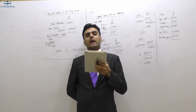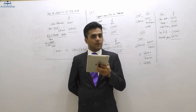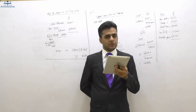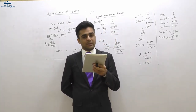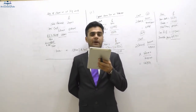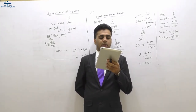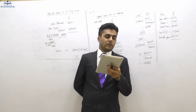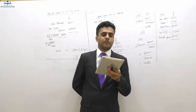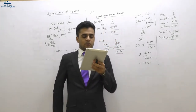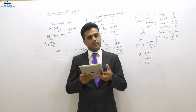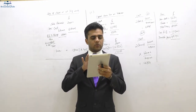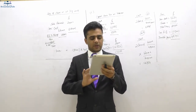Entrepreneur relief will be available on the freehold shop, where the gain is £50,000, at the rate of 10%. Entrepreneur relief will not be available on the goodwill gain of £42,000. We will use the annual exempt amount of £11,300 against goodwill first, as it is not qualifying for entrepreneur relief, and the remaining gain will be taxed at 20%. The qualifying gain of £50,000 on the freehold shop will be taxed at 10% where entrepreneur relief is available. Please redo question number 20 of the BPP exam kit.